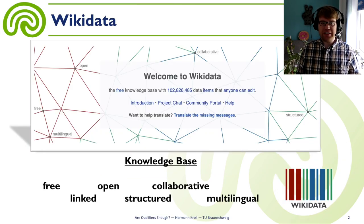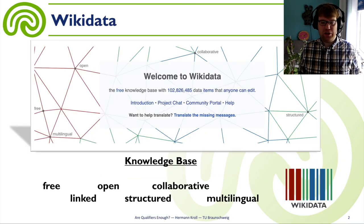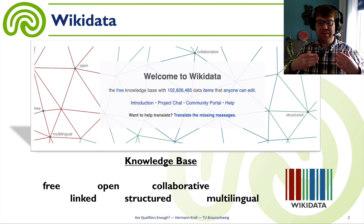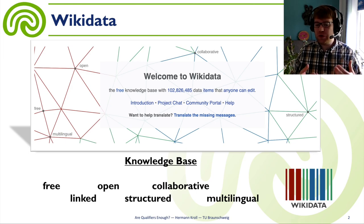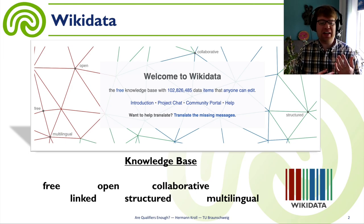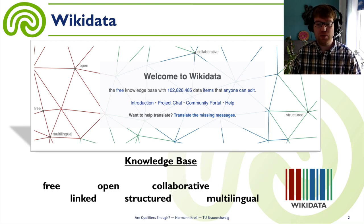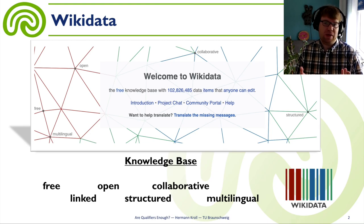So what is Wikidata? In the first place, Wikidata is a knowledge base. It has items and has statements about these items. If you ask for terms associated with Wikidata, you might say it's free, linked, open, structured, collaborative, and multilingual.